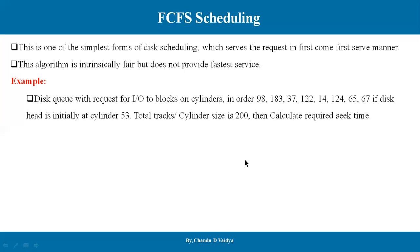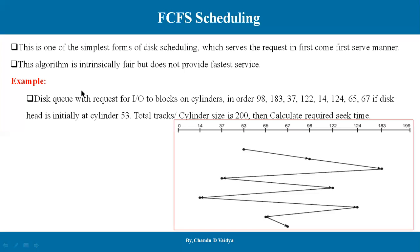We have asked to calculate the required seek time — the total head movement. There are two types of numericals you may be asked. For this simple numerical, there is a pending request, the current head position is given, and the total cylinder count is given. Now, how do we calculate? First, we need to plot these requests on a cylinder. We need to plot them — drawing a horizontal line representing the cylinder range from 0 to 199.